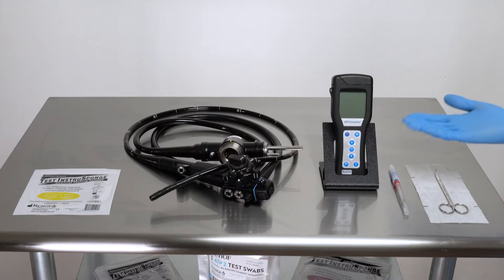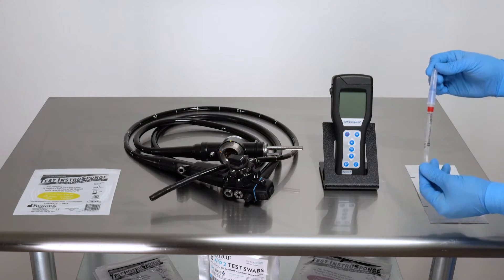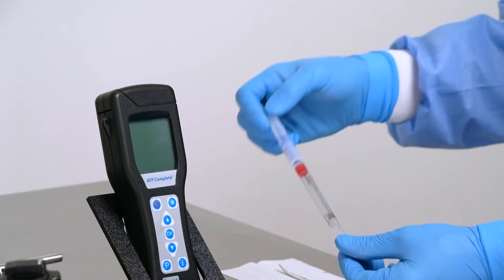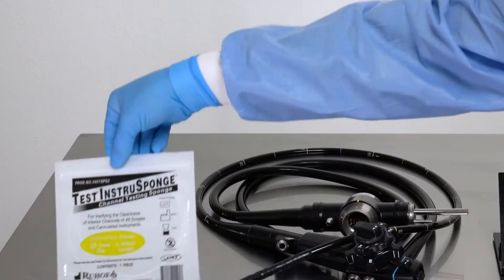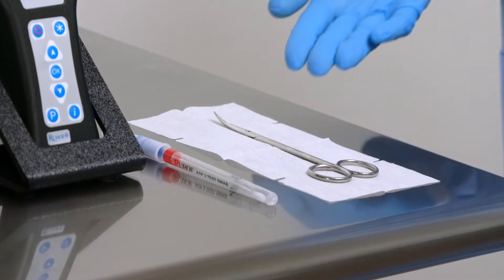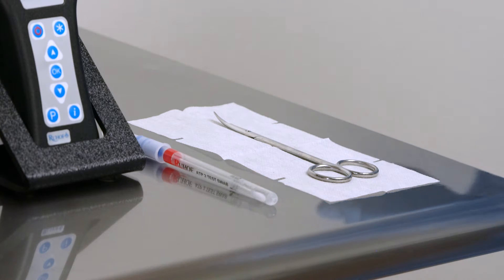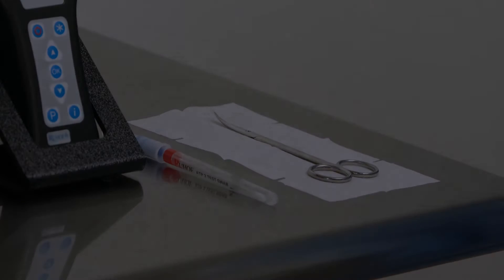In addition to the testing unit, you will need a Ruhoff test swab, a Ruhoff test Instra sponge, scissors that have been wiped with isopropyl alcohol or other disinfectant placed on a clean surface, such as gauze.